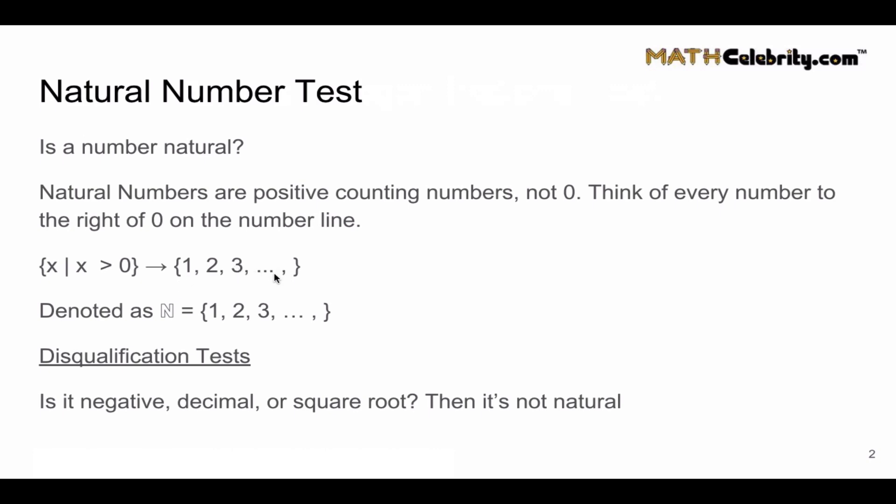The special symbol for natural numbers is ℕ, so that tells you that {1, 2, 3, ...} is the natural number set. Now I'm a big fan of shortcuts and laziness and speed.